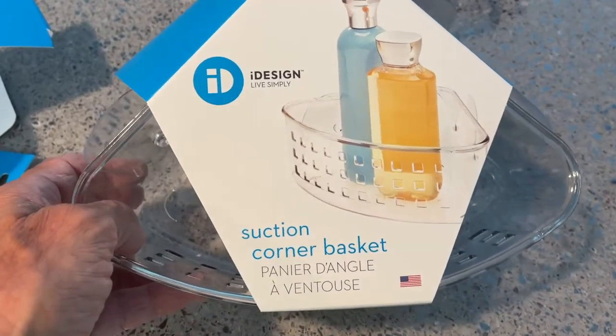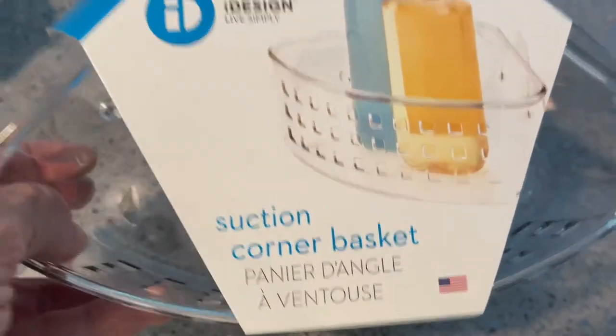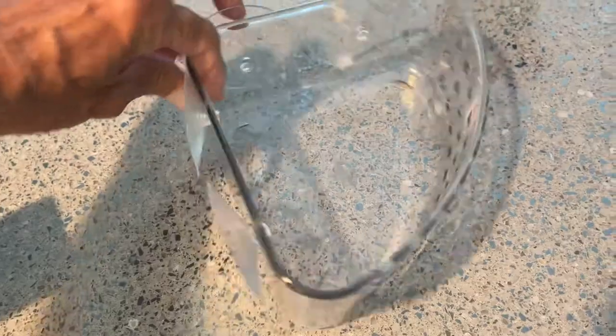All right, I'm going to show you how to put these suction corner baskets into your shower. These go into the corners and they have little suctions on them. So you put it in the corner like that. It sticks on there.